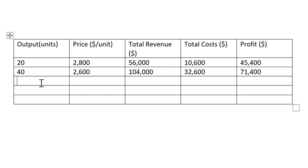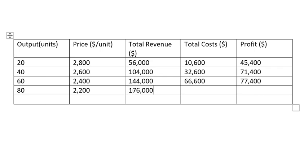When output equals 60, price is 2,400, total revenue is 144,000, total cost is 66,600, and profit is 77,400. When output is 80, price is 2,200, total revenue is 176,000, total cost is 112,600, and profit is 63,400.